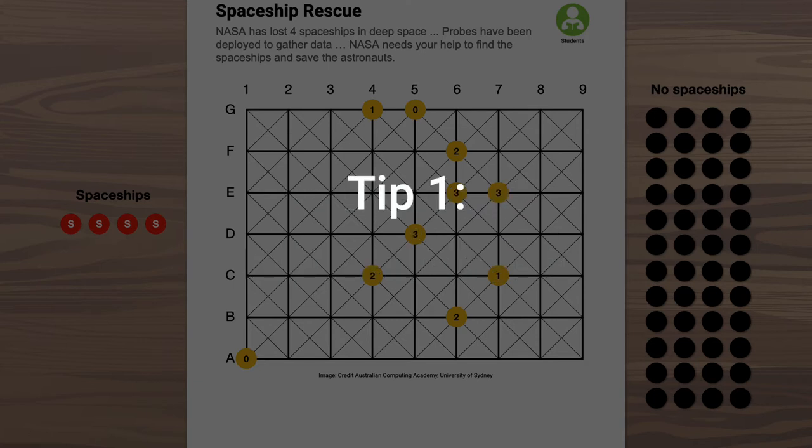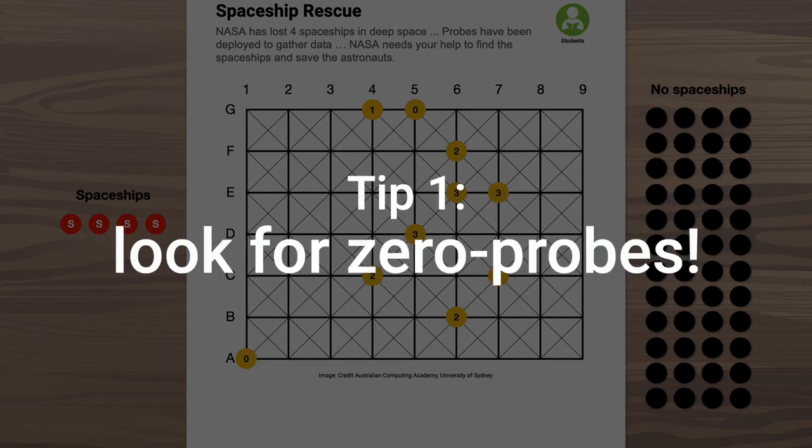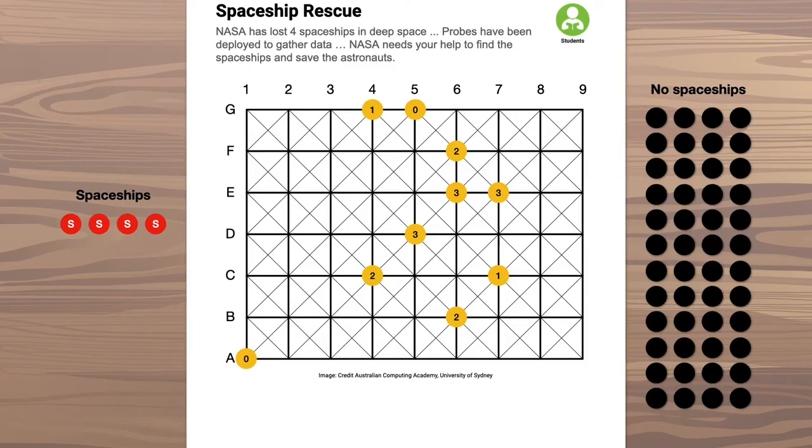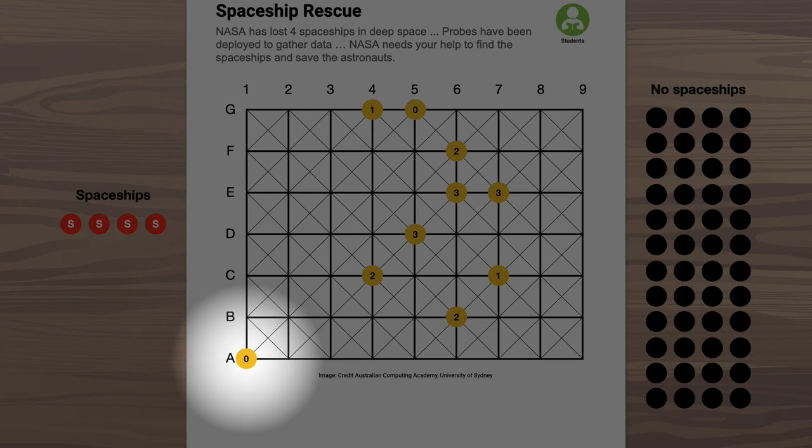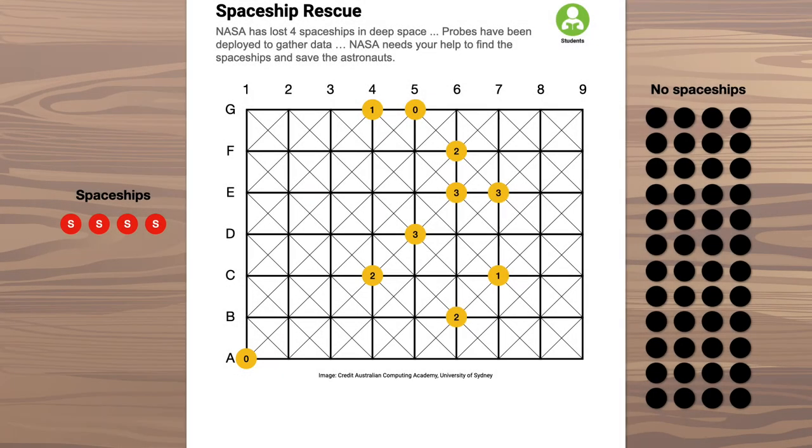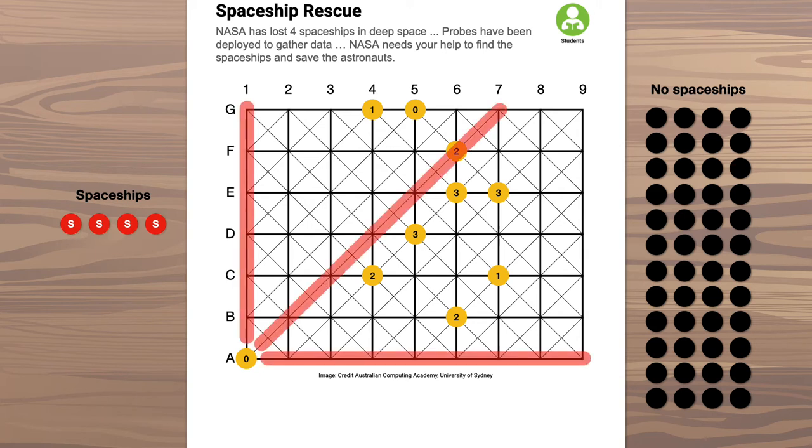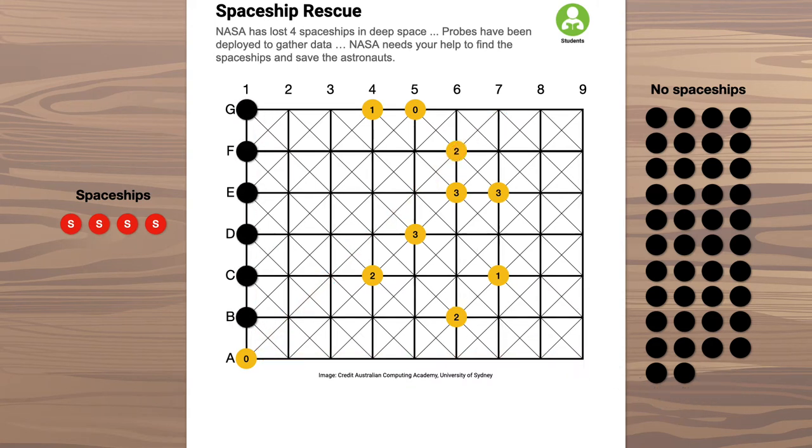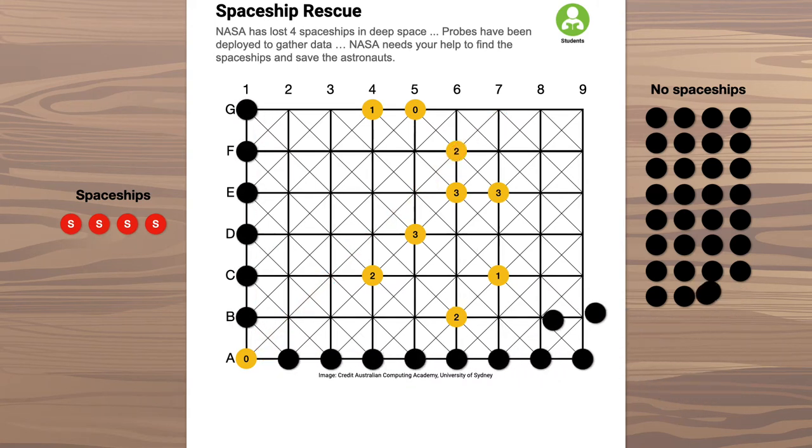Here's the first thing you can do. Look for any probes that can't see any lost spaceships at all. Here's one. Down at grid point A1, there's a probe with the number 0 on it. That means that there are no lost spaceships along the lines horizontally, vertically, and diagonally from there. So you can put the no-spaceship counters at all of those points.